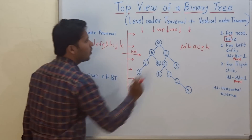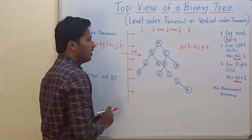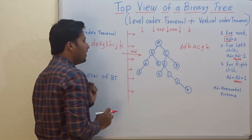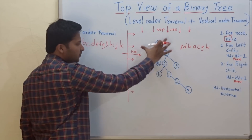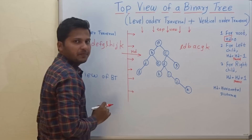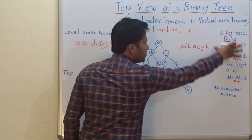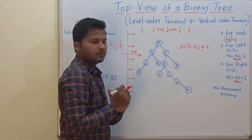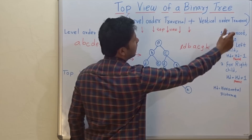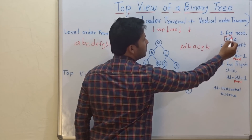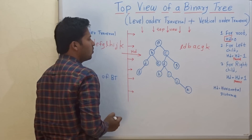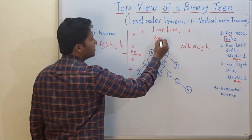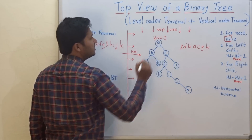Now let's go for vertical order traversal. For vertical order traversal, you have to calculate the horizontal distance (HD) for each node in this binary tree. These are the three rules for calculating horizontal distance. The first rule says that for the root, HD is equal to 0. So for the root in this binary tree, we assign HD as 0.